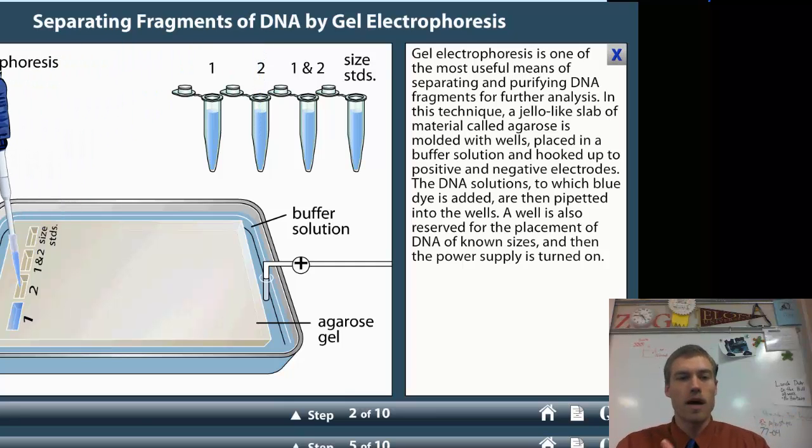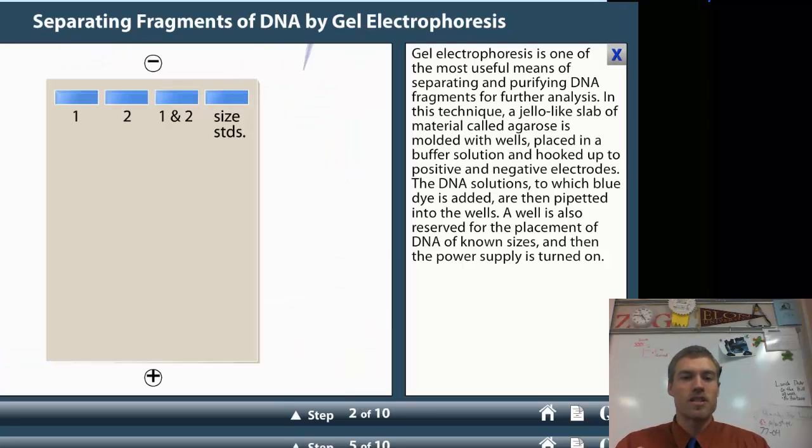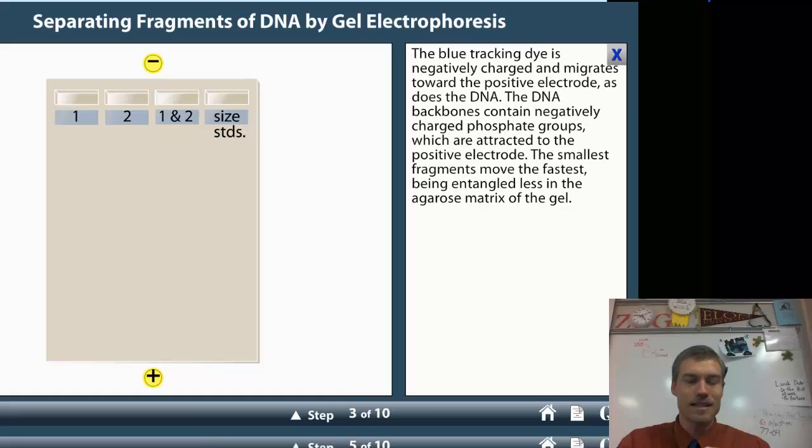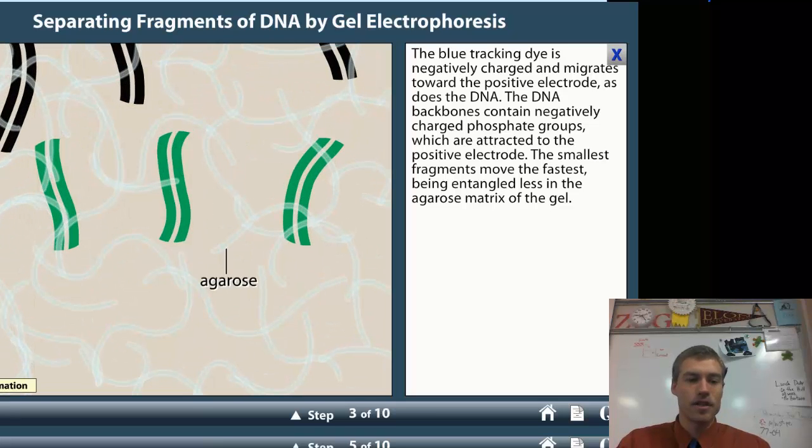We use what's called a micropipet that allows us to get very specific volumes, and we load these into what are called wells. So these are the various wells, and we've got a positive end and a negative end, and that's very important because DNA is negatively charged.